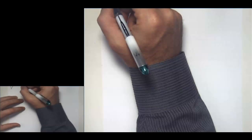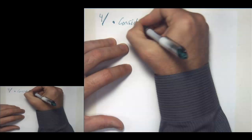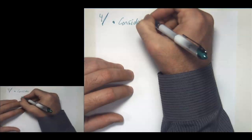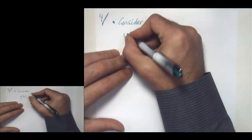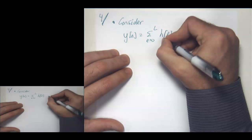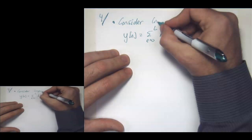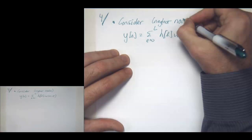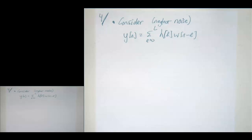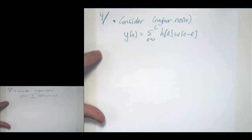Looking at the received signal after match filtering, symbol synchronization, and frame synchronization, assuming a length L+1 channel and neglecting noise: Y[n] = sum over l from 0 to L of H[l]·W[n−l]. We want to use the structure of W that we've created.